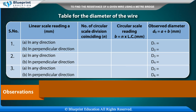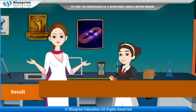Table for the diameter of the wire — columns: serial number, linear scale reading A (mm), number of circular scale divisions coinciding N, circular scale reading B = N × LC (mm), observed diameter D₀ = A + B (mm), measured in any direction and in perpendicular direction. Readings D1 through D6 are recorded. Mean observed diameter D = X mm.